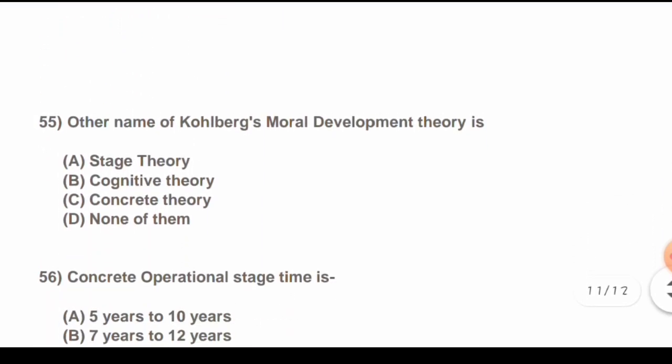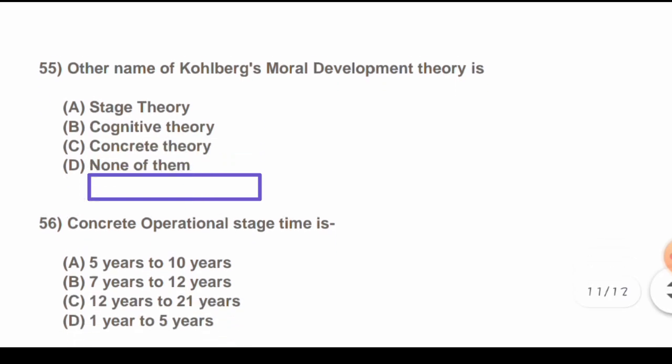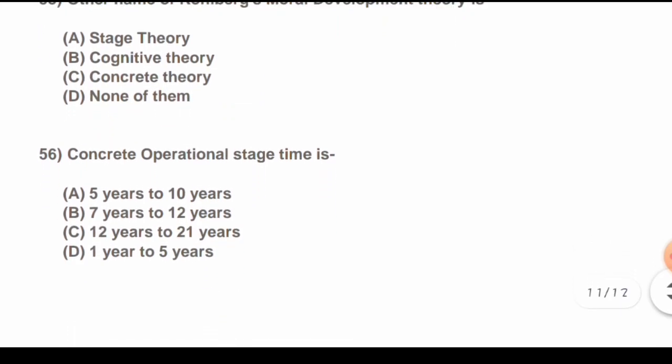Question 54: The other name of Kohlberg's moral development theory is: Options are: A) Stress theory, B) Cognitive theory, C) Concrete theory, D) None of them. The correct answer is B) Cognitive theory.